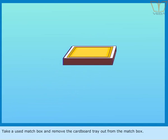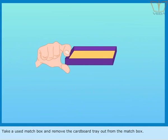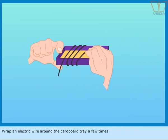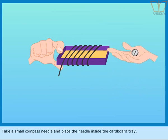Take a used matchbox and remove the cardboard tray out from the matchbox. Wrap an electric wire around the cardboard tray a few times. Take a small compass needle and place the needle inside the cardboard tray.